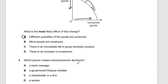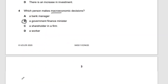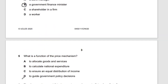Question four: which person makes macroeconomic decisions? Macroeconomic decisions are made by governments — for example, public hospitals. A bank manager is microeconomic, not macro. The government is the correct answer, so the answer is B.